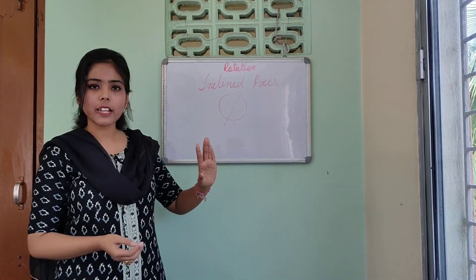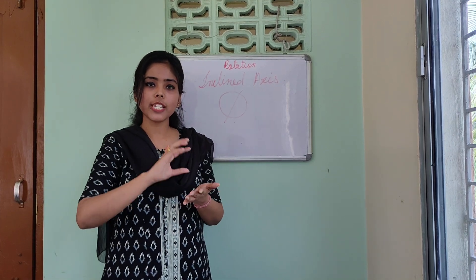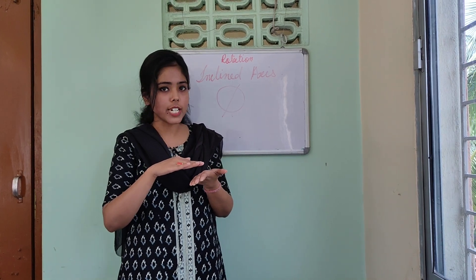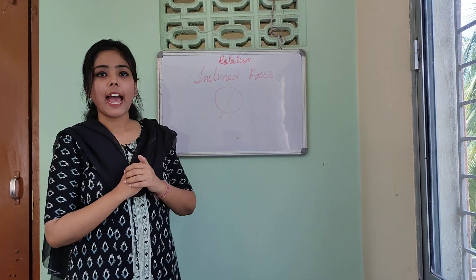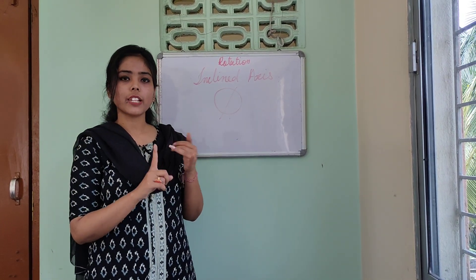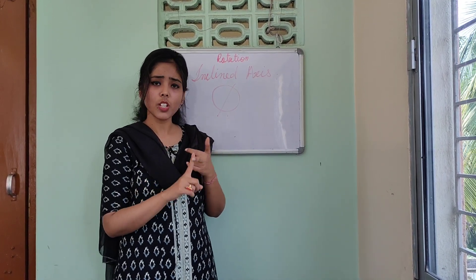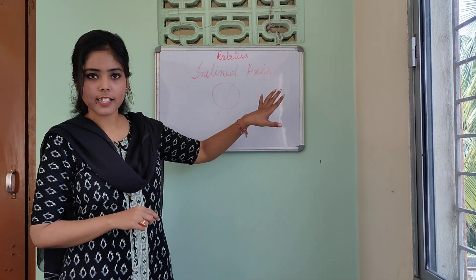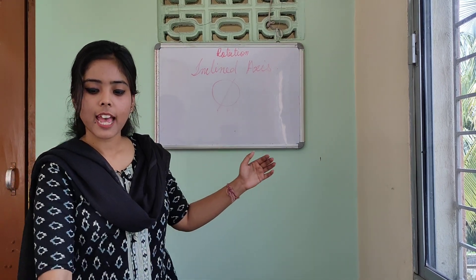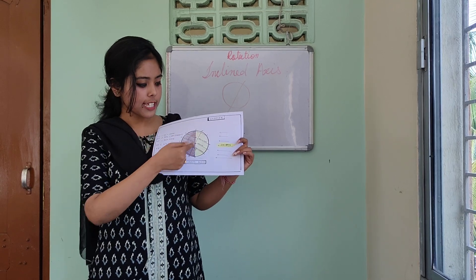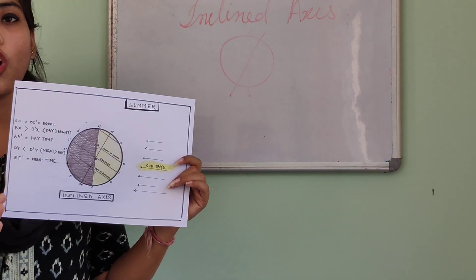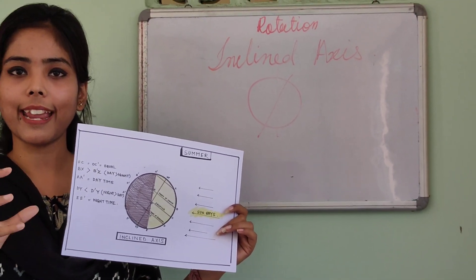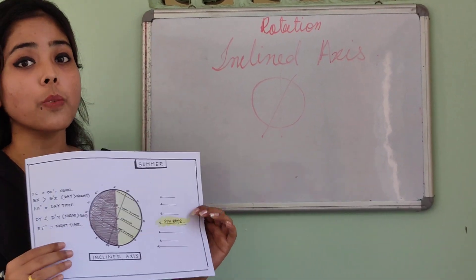The inclined axis is an imaginary line tilted 23.5 degrees from the vertical line and 66.5 degrees from the horizontal line. We also discussed the effects of rotation: day and night, sunrise and sunset, duration of time, Coriolis force, and time management. Due to the inclined axis, we cannot say that the length of daytime and nighttime is the same everywhere. If it were a vertical line, the Earth would receive equal sunlight everywhere, which is not possible in the real world. Next day, we will start with revolution.